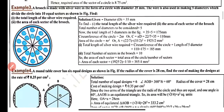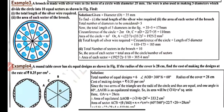Example 3: A brooch is made with silver wire in the form of a circle with diameter 35 mm. The wire is also used in making five diameters which divide the circle into 10 equal sectors. Find the total length of silver wire required and the area of each sector.